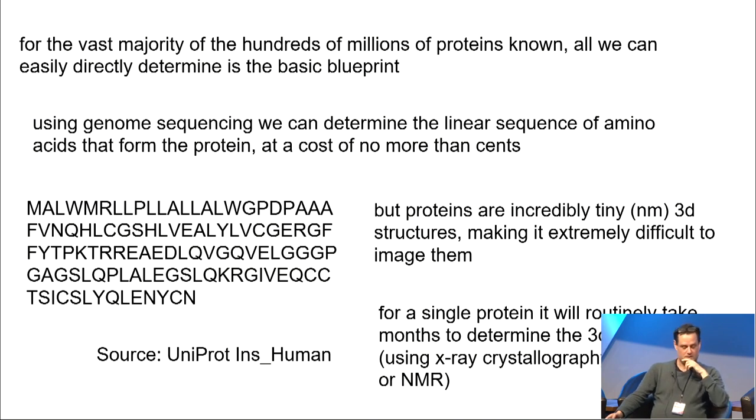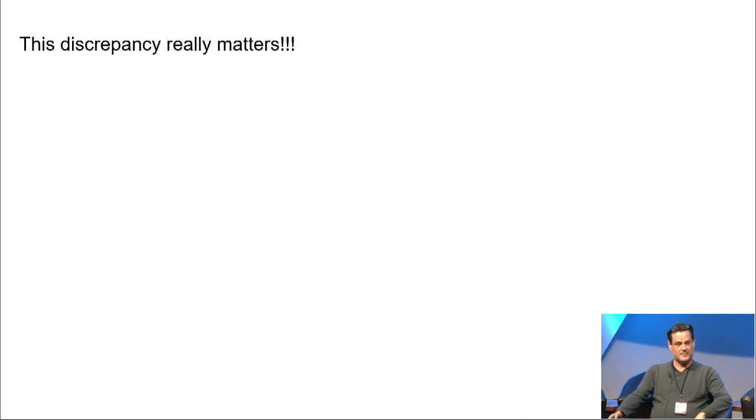One was at the Protein Structure Initiative. I think it cost, in its first phase, $250 million. And the average, they found the structure for 1,100 proteins. That's a cost of about a quarter of a million dollars each. It's a big difference, big gap.